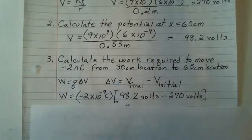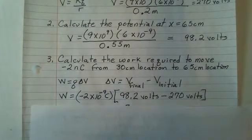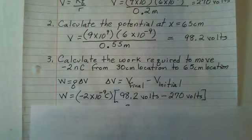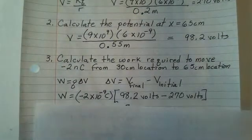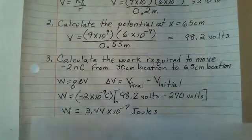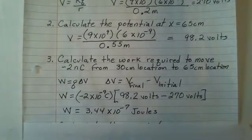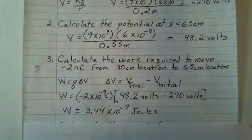final position is 65 centimeters where the potential is 98.2 volts. The initial position, the potential was 270 volts. Now we have to subtract to get the change in potential. And a small amount of work is required, 3.44 times 10 to the minus 7 joules.